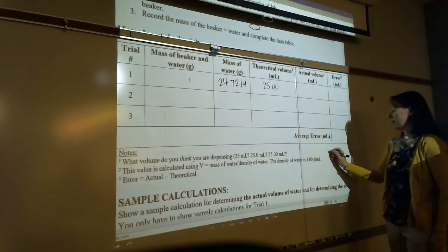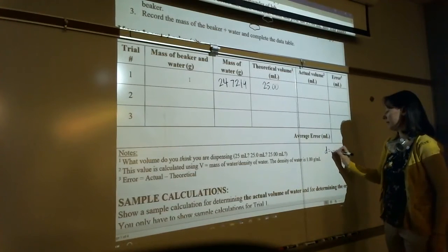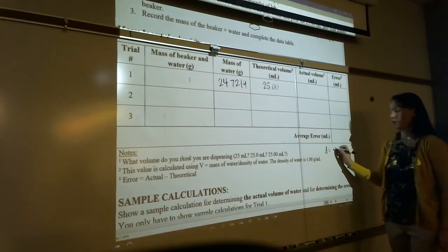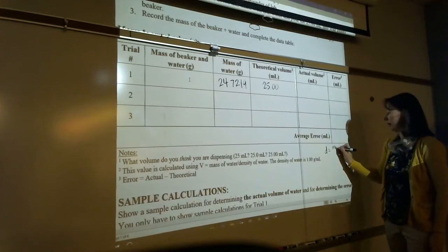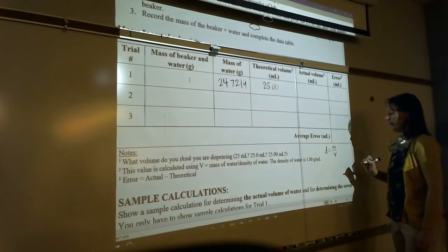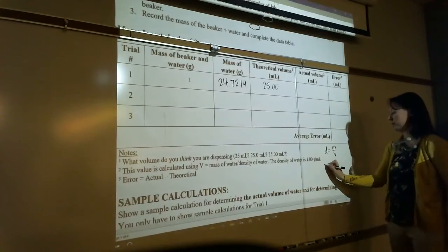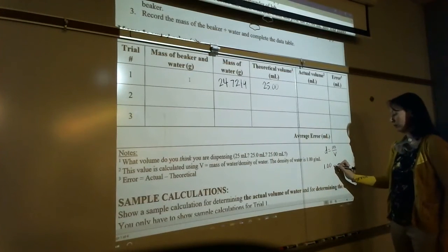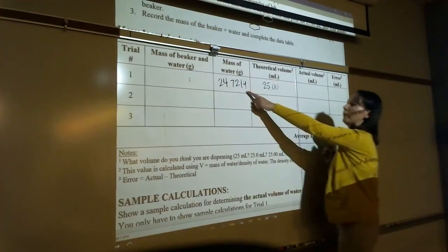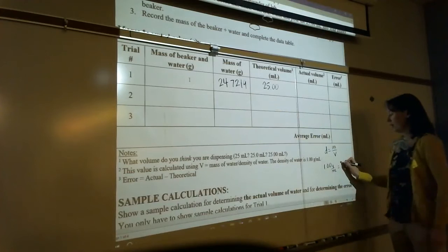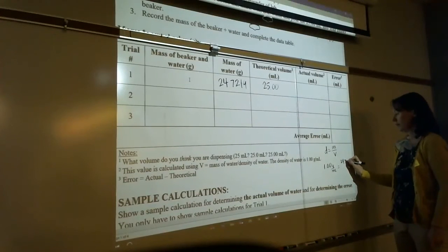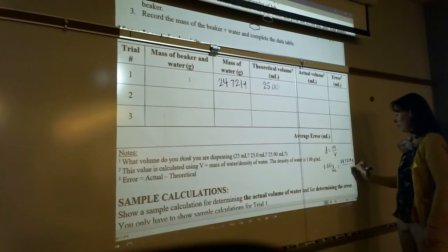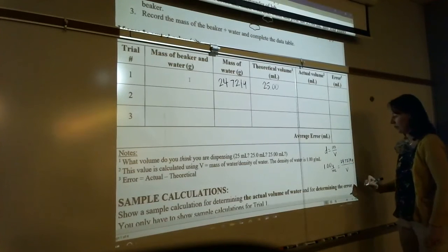The actual volume is obtained using the density of water. So what is the formula for density? Density equals, who remembers? Mass over volume, right? Now the density of pure water is 1.00 grams per milliliter, right? And you're going to plug in your mass, right?